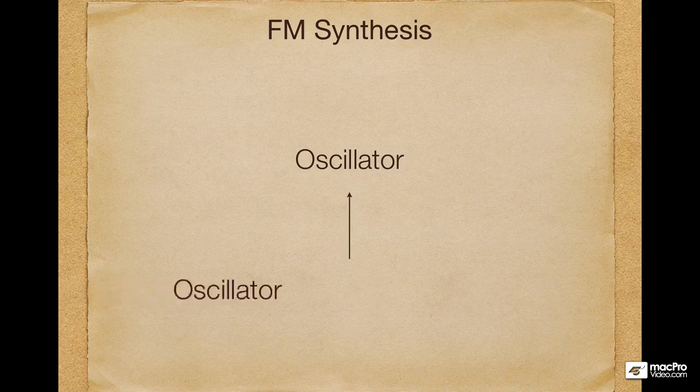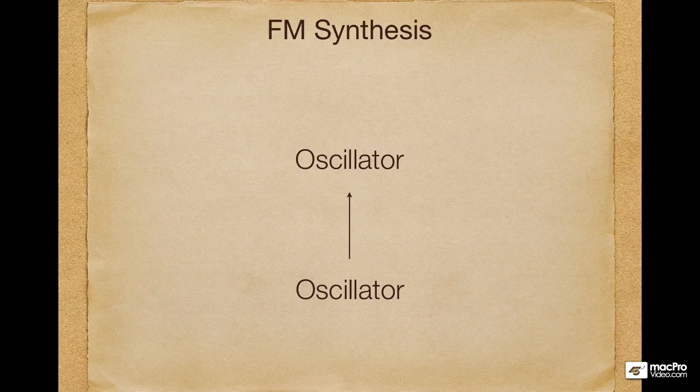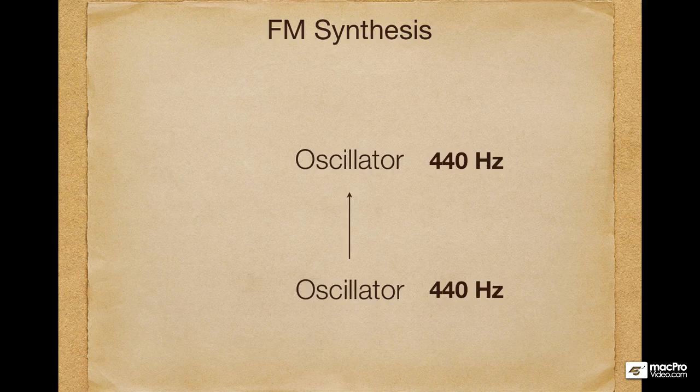Now just imagine that instead of the LFO, we use another oscillator which is identical to the main oscillator. What ends up happening is that we don't hear vibrato, as the modulation is happening in the audible range. Like if the main oscillator is 440Hz, the modulating oscillator is also 440Hz, which doesn't end up sounding like vibrato, but more like a timbre change. This is FM synthesis.